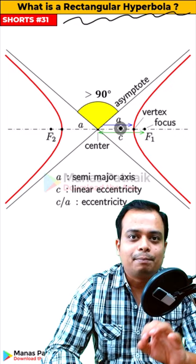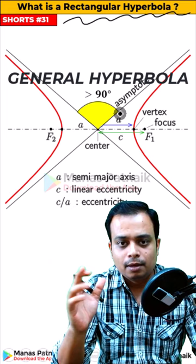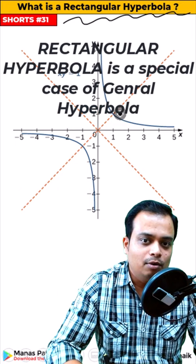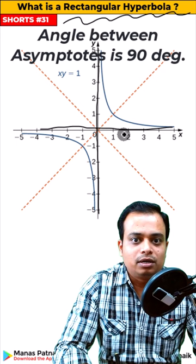So what you will call this is a general hyperbola. But remember, rectangular hyperbola is a special case of a general hyperbola. How? Here the angle between asymptote number one and asymptote number two turns out as equal to 90 degrees.